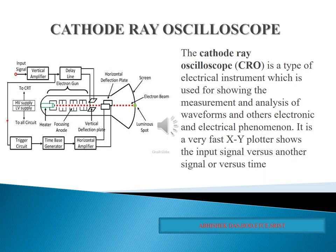The system of electrodes is contained in an evacuated glass tube with a viewing screen at one end. A beam of electrons is generated by the cathode and directed to the screen, causing the phosphor coating on the screen to glow where the electrons strike. The electron beam is deflected vertically and horizontally by externally applied voltage.